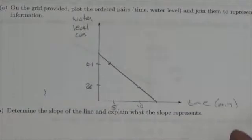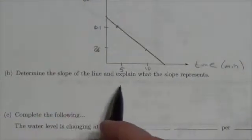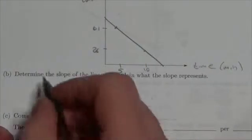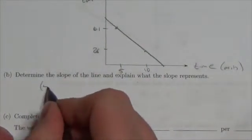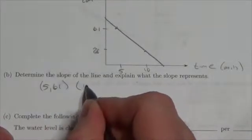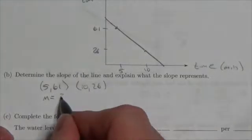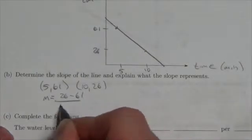So there we go. It doesn't have to be super precise or accurate, just to get the sense of what's going on here. You want to get the sense that this is dropping. Okay, it's got negative slope. So now the question is, determine the slope of the line and explain what it means. Well, we've got the two points here. We've got 5 comma 61 and 10 comma 26.